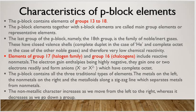Now, P block elements characteristics. The P block contains elements of group 13 to 18. The P block elements together with S block elements are called main group elements or representative elements. The last group of P block is called noble gas, which is 18th group. And these elements have, in case of helium, complete duplet and in case of other elements, complete octet.